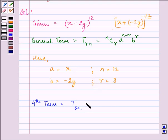Now, just substitute the values. We have 12C3 × x^(12-3) × (-2y)^3. Let us simplify it.